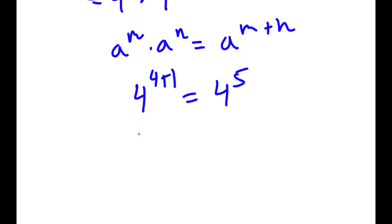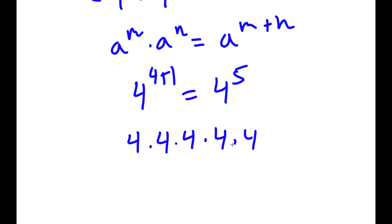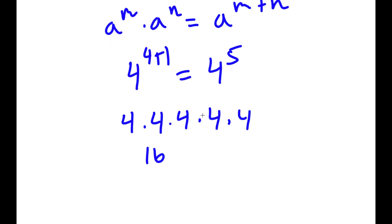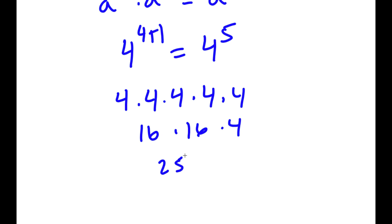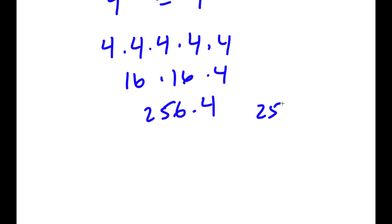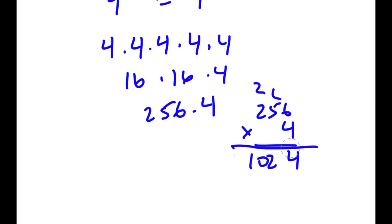And 4 to the power of 5 is 4 times 4 times 4 times 4 times 4. 4 times 4 is 16, times 4 times 4 again is 16, so 16 times 16 is 256, and 256 times 4 is equal to 1,024.